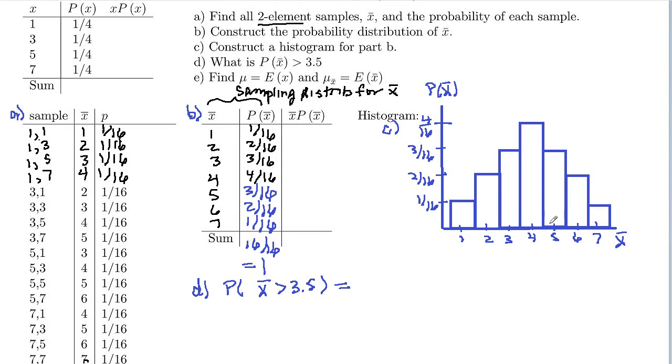Probability that X bar is greater than 3.5. So 3.5 is right here. So greater than 3.5 would be 4, 5, 6, or 7. So that's going to be probability that X bar is greater than or equal to 4, which is the same as the probability of X bar is 4, 5, 6, or 7. And then these are ORs, so that's addition rule. We're going to add those probabilities. So 4/16ths, 3/16ths, 2, and 1.